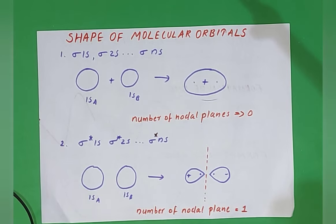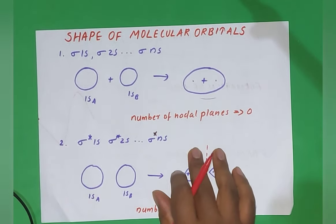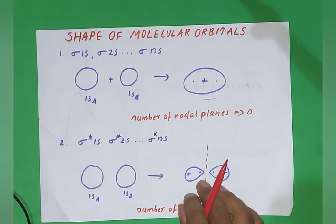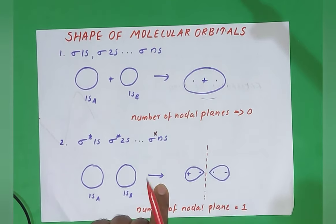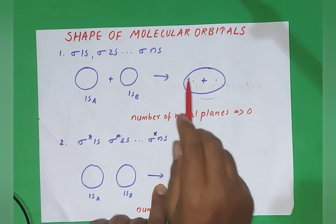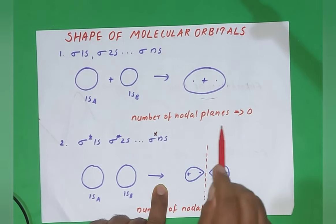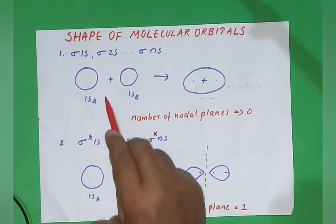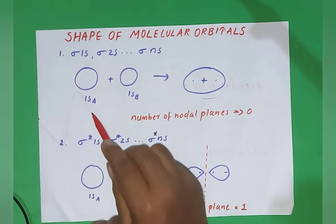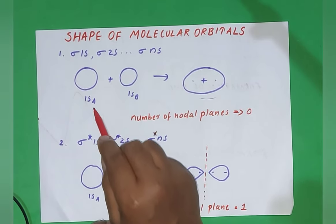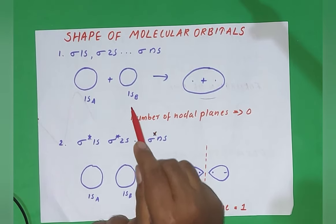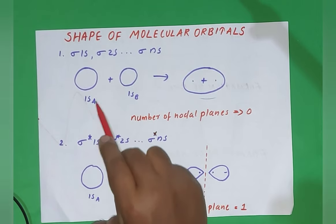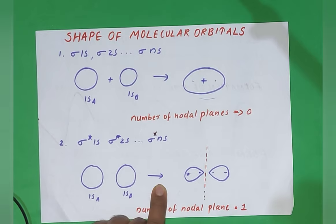Now we can discuss the shape of each molecular orbital. First, sigma 1s or generally sigma ns. The shape of sigma 1s or sigma ns has no nodal plane. It is formed by constructive interference, ψA plus ψB, where the 1s atomic orbital of atom A and the 1s atomic orbital of atom B combine constructively. The number of nodal planes is zero.